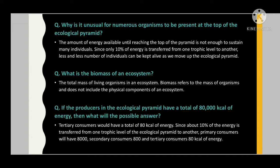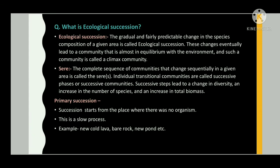What is the biomass of an ecosystem? The total biomass refers to the mass of living organisms and does not include the physical components of an ecosystem. If the producers in the ecological pyramid have a total of 80 kilocalories of energy, since about 10 percent of the energy is transferred from one trophic level to another, primary consumers will have 8,000, secondary consumers 800, and tertiary consumers 80 kilocalories of energy.